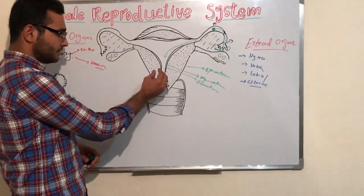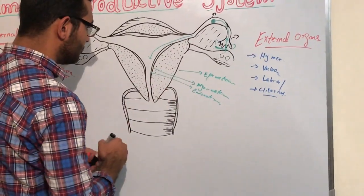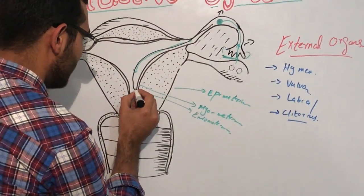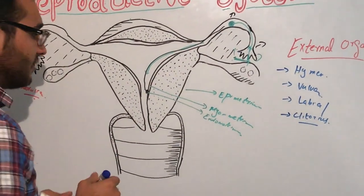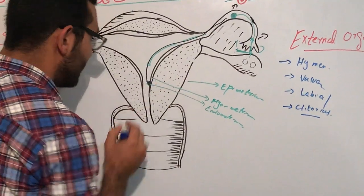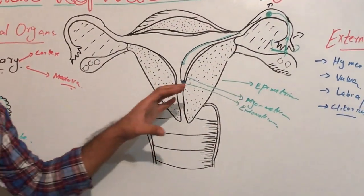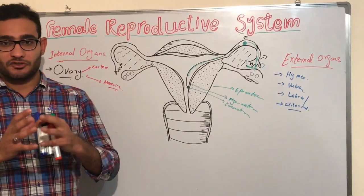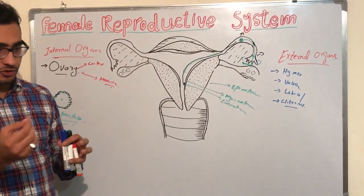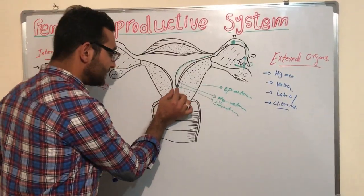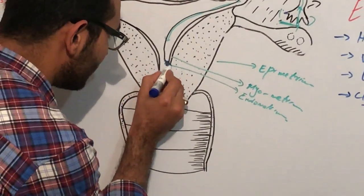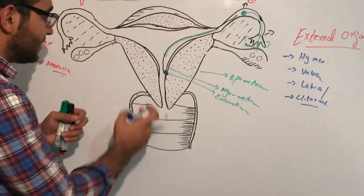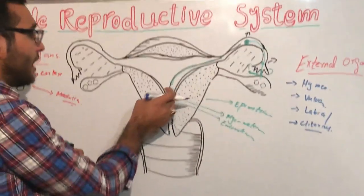The myometrium provides nutrition to the fetus when the zygote is implanted. Near to the time of delivery, the myometrium also has specific oxytocin receptors. Oxytocin causes contraction of the uterus. When the myometrium has oxytocin receptors near delivery, the uterus contracts and the baby is pushed down.